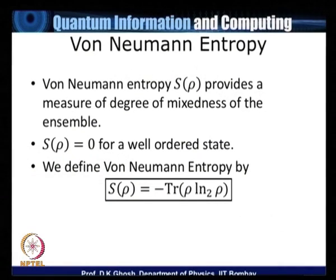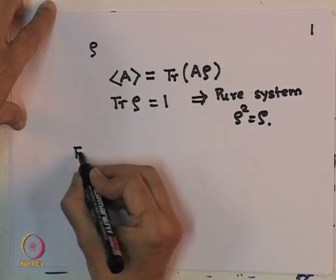Von Neumann entropy S(ρ) provides a measure of the degree of mixedness in an ensemble. Firstly, I require for a pure system, like in case of Shannon entropy, S of ρ must be equal to 0.